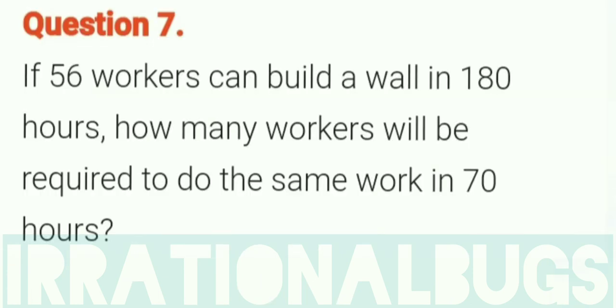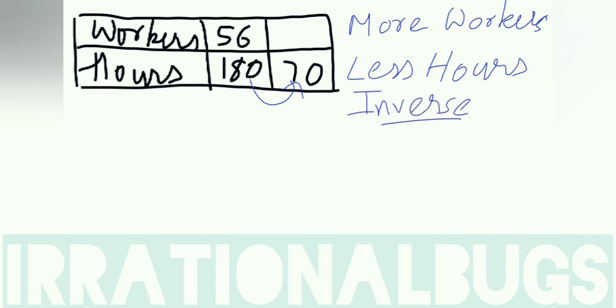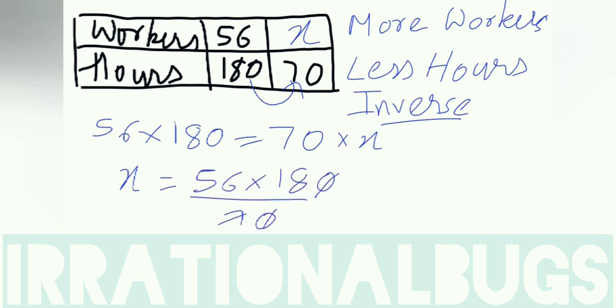Question number 7: If 56 workers can build a wall in 180 hours, how many workers will be required to do the same work in 70 hours? Two quantities - one is workers, one is hours. Earlier what was happening in 180 hours is now happening in 70 hours. Less hours indicates more workers. Again inverse variation, so multiply. 56 into 180 is equals to 70 into x. So x is equals to 56 into 180 upon 70. Further x is equals to 8 into 18, which is 144. So our answer is 144 workers.